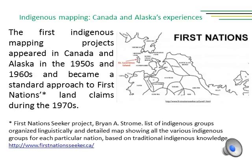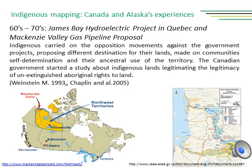An example of a project is the First Nation Seeker project developed by Brian A. Strome—a comprehensive list of indigenous groups organized linguistically, supported by detailed maps showing various indigenous groups and each particular nation based on traditional indigenous knowledge. In the 1960s, indigenous populations began to react against persistent attempts by the government to assimilate indigenous peoples into the general Canadian population and impose mega-projects on their land, such as the James Bay hydroelectric project in Quebec and the Mackenzie Valley gas pipeline proposed for the Northwest Territories. Negotiation and struggle brought about more favorable policies, but advancement has been difficult.